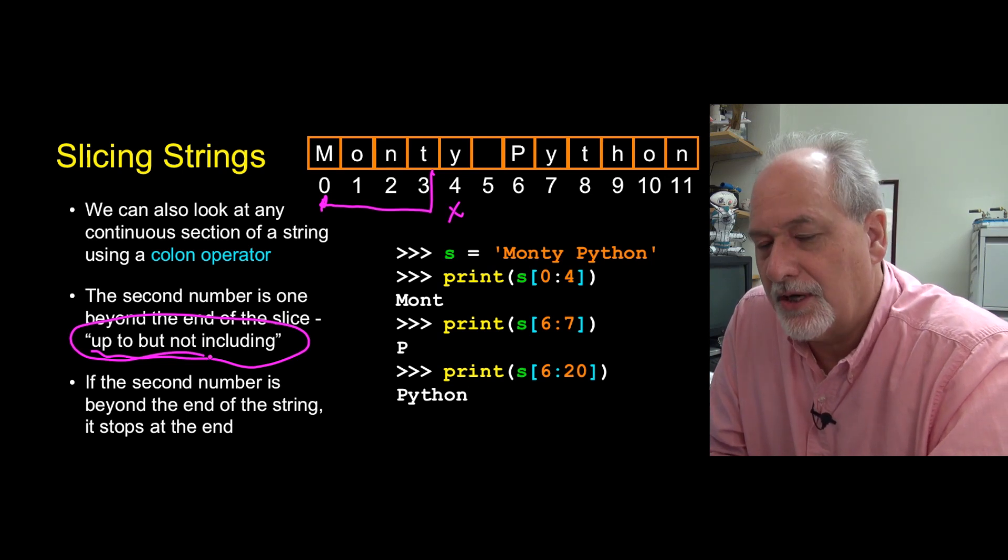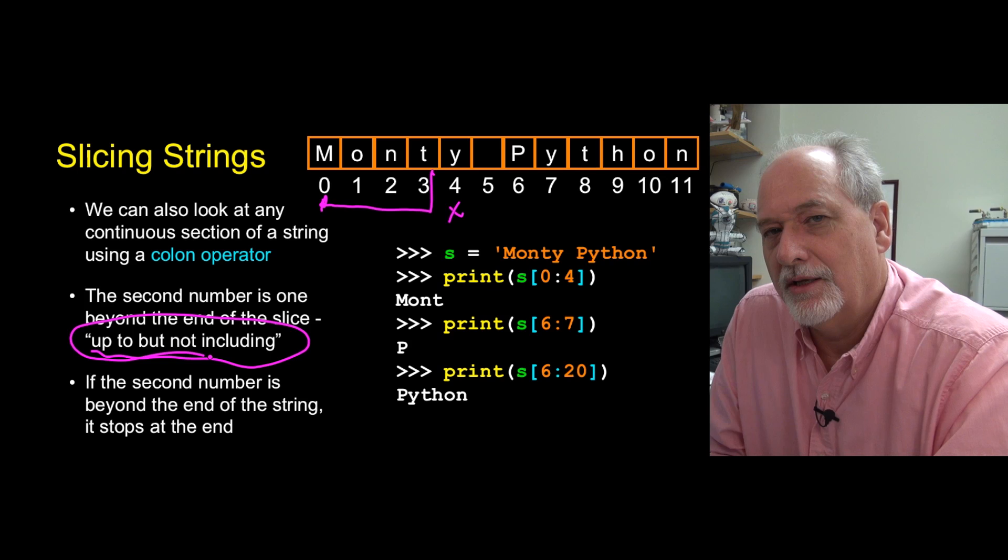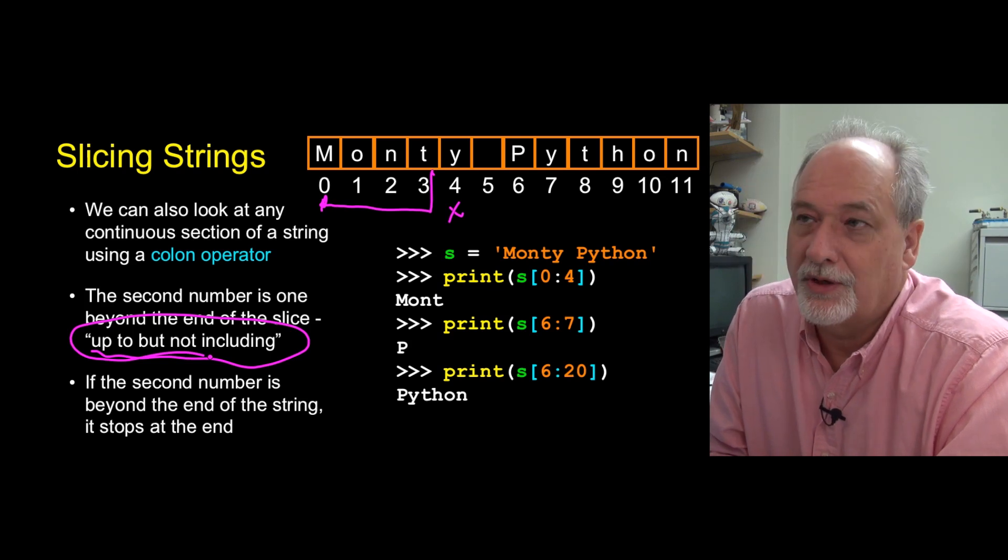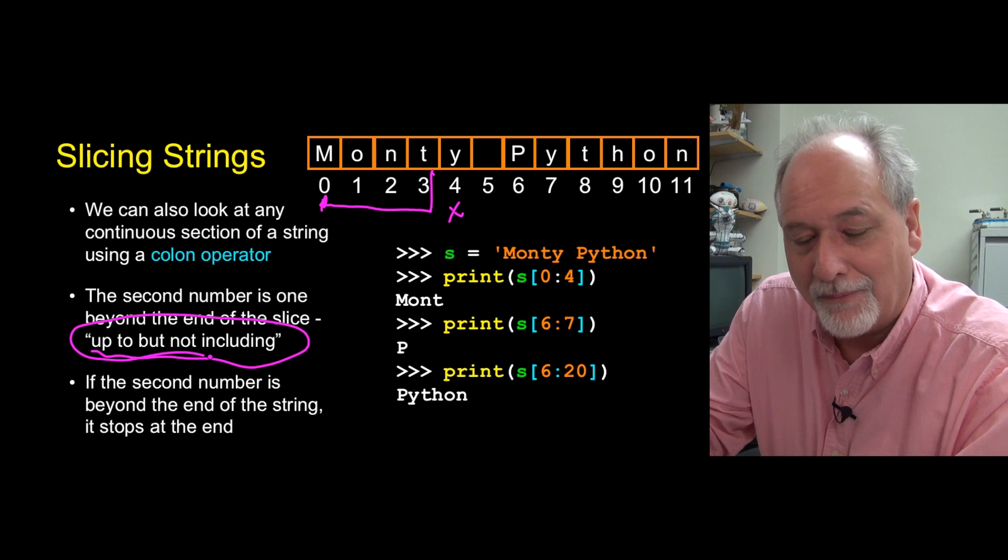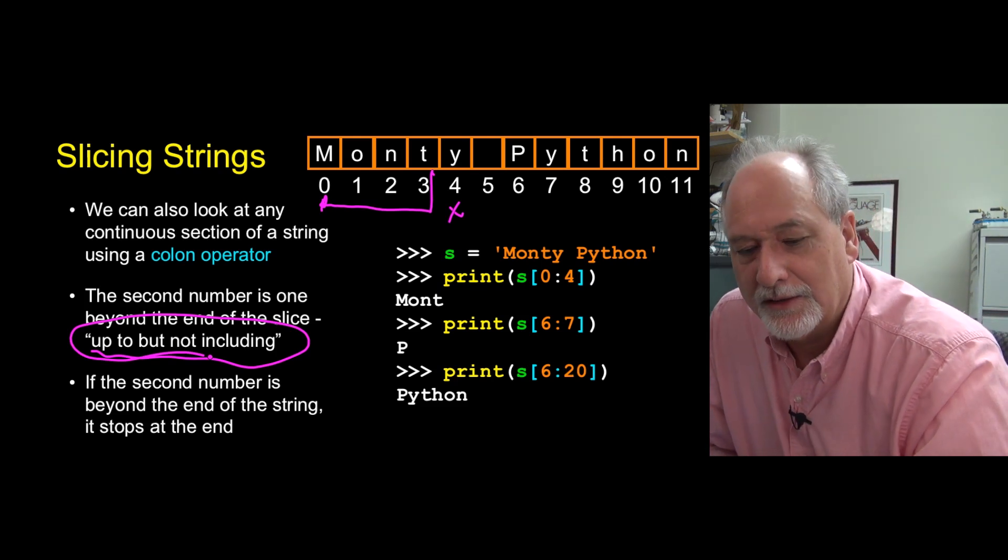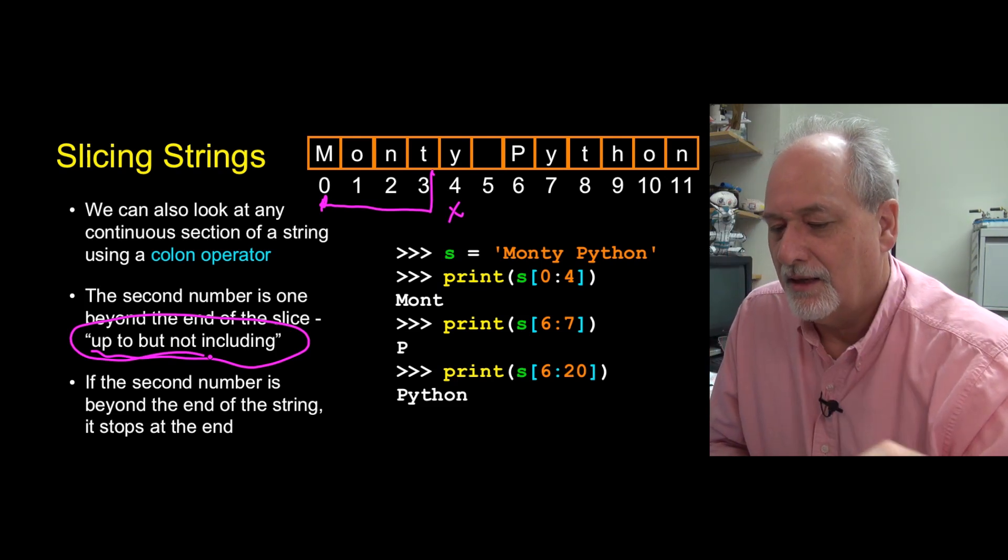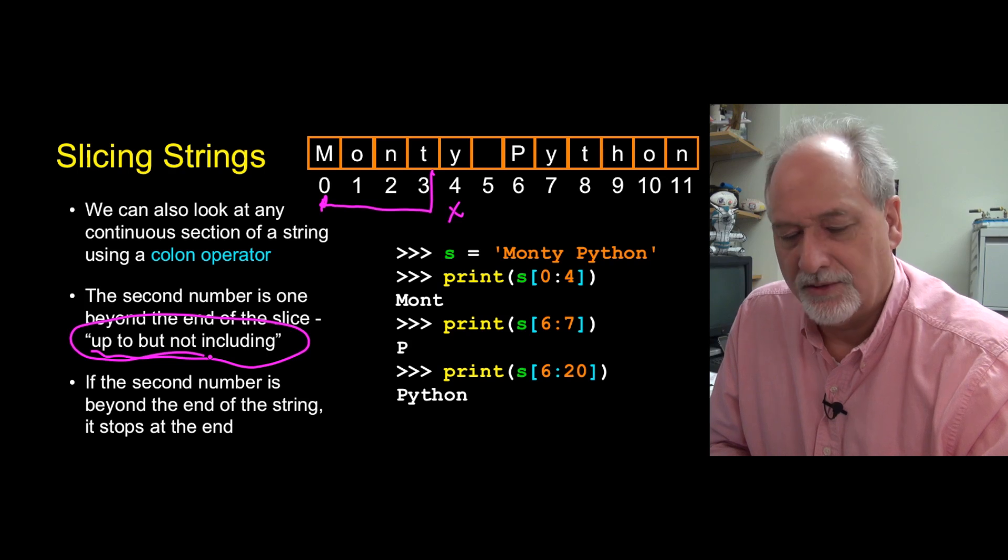This seems counterintuitive, kind of like starting at zero seems counterintuitive, but after a while you'll get used to it. There'll be situations where you're writing code and you'll think, oh, that's why that works better. But just for now, remember it - up to but not including. We'll come back to when that is useful for us.